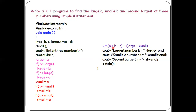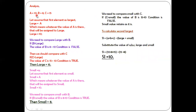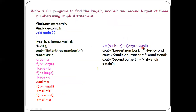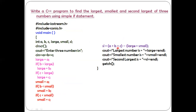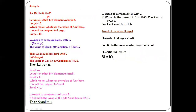sl stands for second largest. The formula is: sl = (a + b + c) - (large + small). Substituting: a is 10, b is 8, c is 15. So 10 + 8 + 15 equals 33. Then large is 15 and small is 8, so 15 + 8 equals 23. Therefore sl = 33 - 23 = 10. So 10 is assigned to sl — the second largest. Among the three numbers: largest is 15, smallest is 8, and second largest is 10.